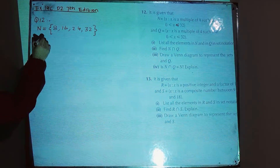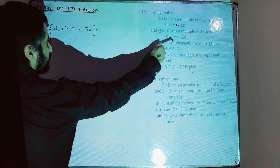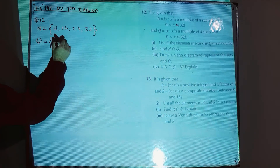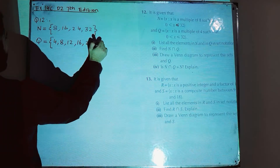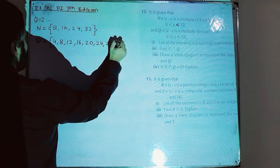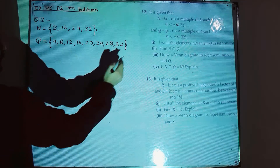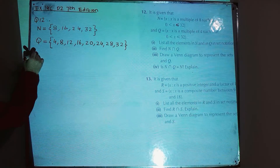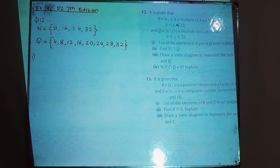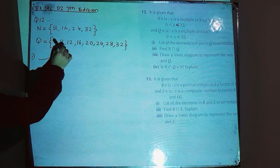Set Q contains multiples of 4 between 0 and 32, with 32 included: Q = {4, 8, 12, 16, 20, 24, 28, 32}. Part 1 asks to list all elements in N and Q — that is done.